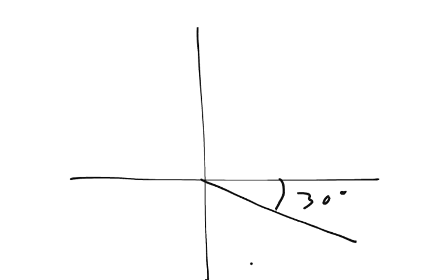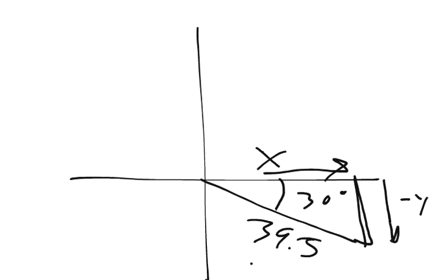And if we do, then this 39.5 units, we can measure it with this right triangle. So, I have x units east and negative y units south.